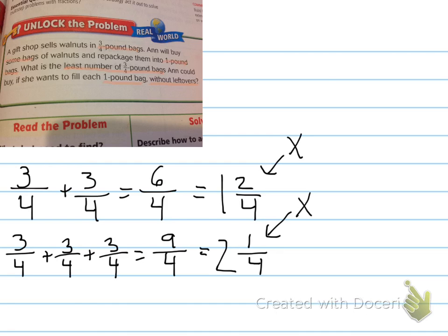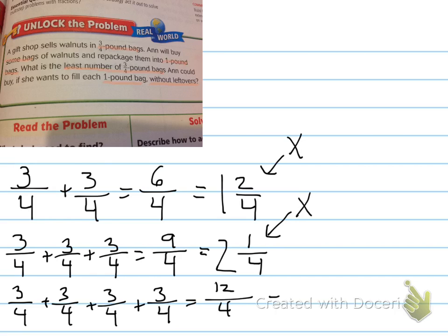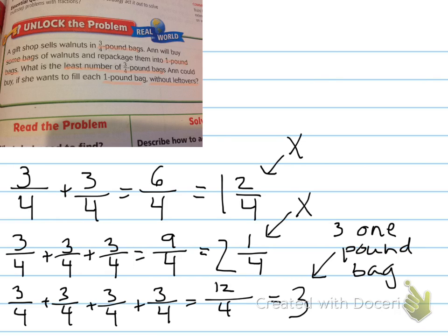Let's try four bags. Three plus three plus three plus three is 12 — denominator stays the same. I see that 12 is divisible by four, so that's going to give us a whole number without any leftover. So 12 divided by four is three. We have three pounds of walnuts — that could be three one-pound bags! And I know it's the least number because we started with two bags, then three bags, then four bags — we went from the lowest up, so this is the lowest possibility.